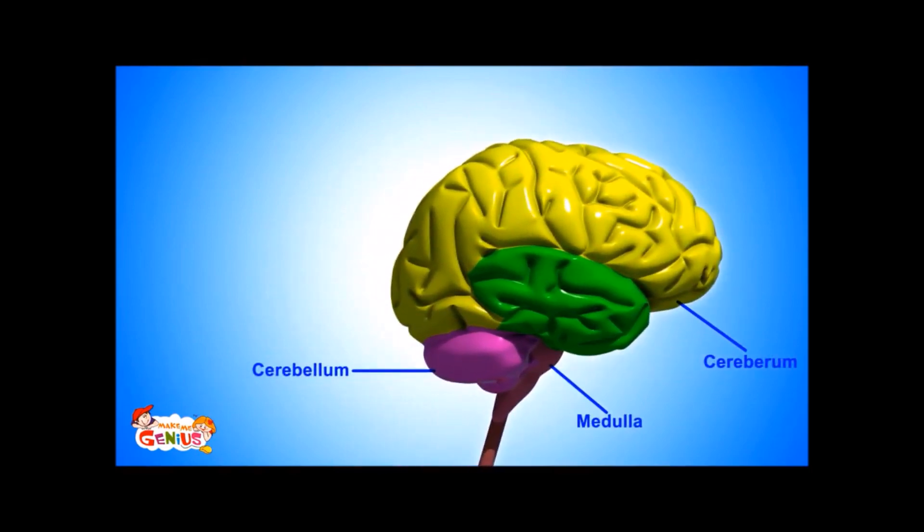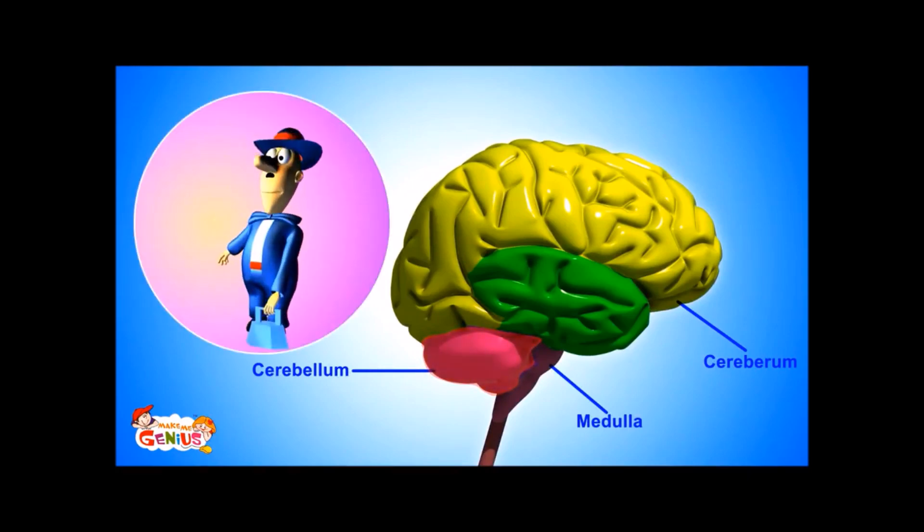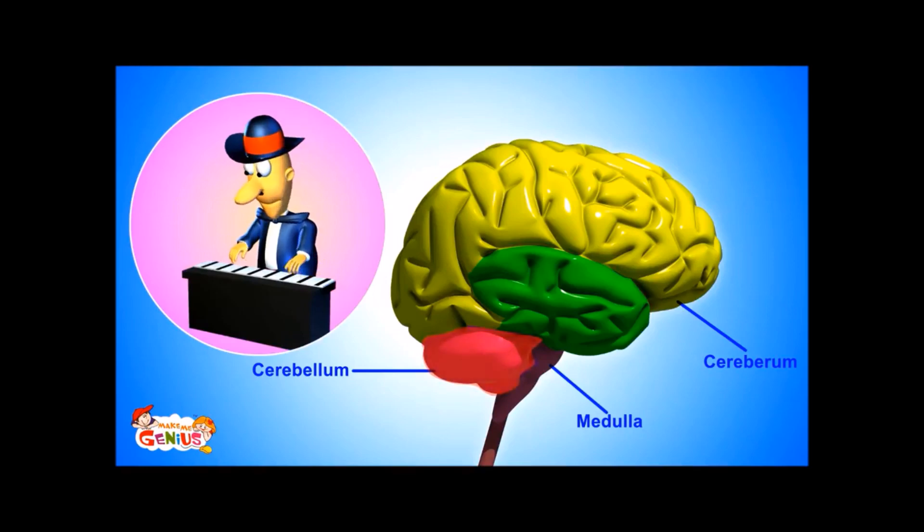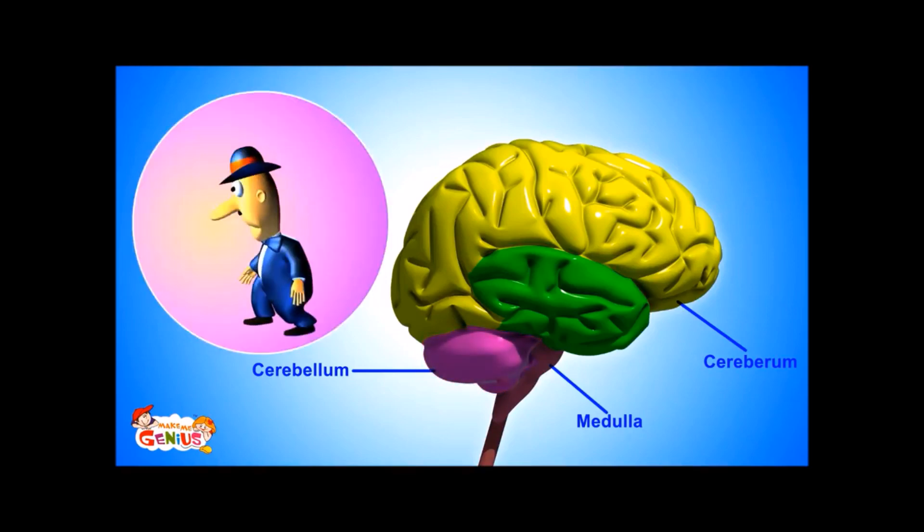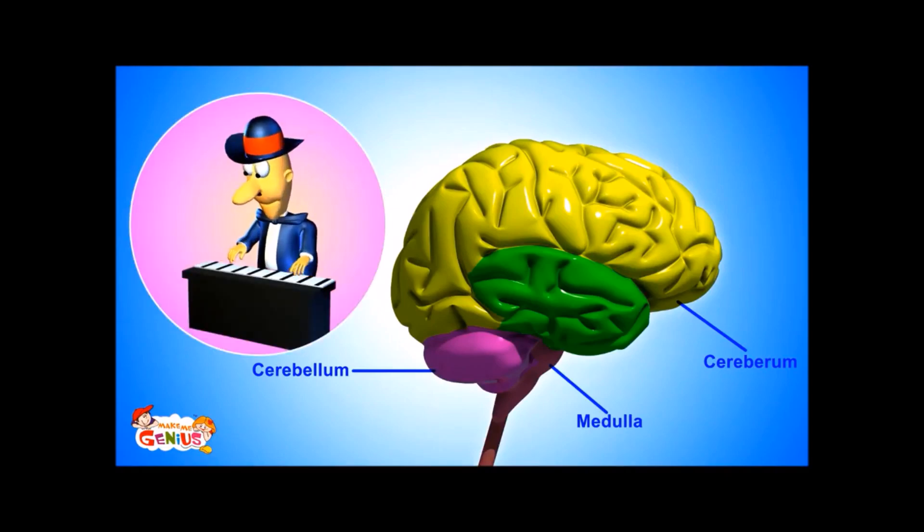The second major part is the cerebellum. It is known as the little brain. It controls our motion, balance, and our ability to learn new things. For example, you can walk without falling because of the cerebellum. Also, it helps with learning any new thing.